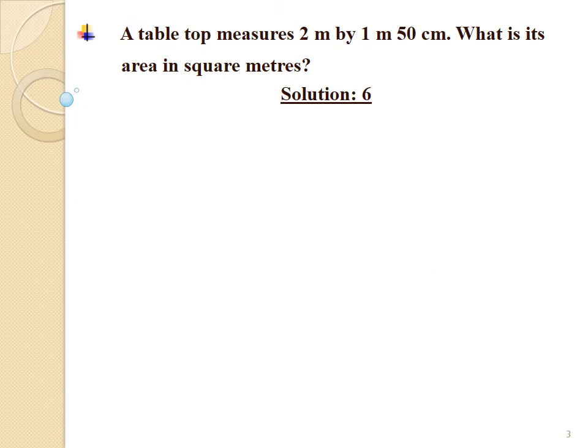Now sum number 6. A table top measures 2 meters by 1 meter 50 centimeters. What is its area in square meters? In this question, we have to find out the area of the table top in square meters. We have been given the length and breadth of the table top which are 2 meters and 1 meter 50 centimeters respectively.